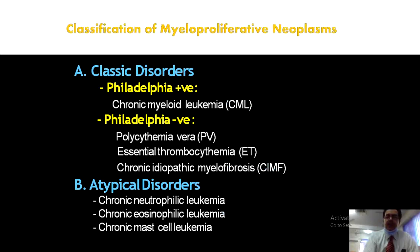The classification of myeloproliferative disorders includes classic and atypical disorders. Philadelphia chromosome-positive is CML or chronic myeloid leukemia. Philadelphia chromosome-negative includes polycythemia vera, essential thrombocythemia, and chronic idiopathic myelofibrosis. Atypical disorders include chronic neutrophilic leukemia, chronic eosinophilic leukemia, hyper-eosinophilic syndrome, and systemic or localized mastocytosis.